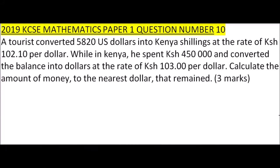Number 10, 2019 Paper 1. We are told: Arturis converted $5,820 into Kenya shillings at a rate of Kenya shillings 102.10 per dollar. While in Kenya, he spent 450,000 Kenya shillings and converted the balance into dollars at the rate of 103.00 per dollar. Calculate the amount of money to the nearest dollar that remained. You get yourself three marks.